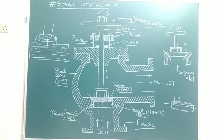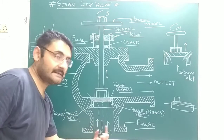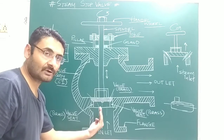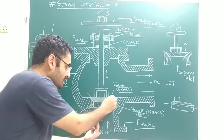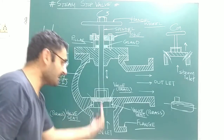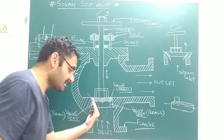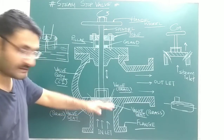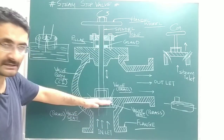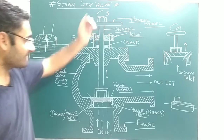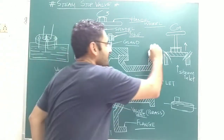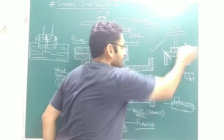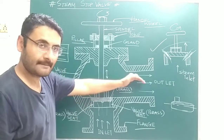Now for the working principle. When steam enters the steam stop valve from the inlet — which comes from the boiler — the valve is initially closed, so no passage is present. The steam stop valve does not allow the steam to escape; the steam remains inside the boiler. When you rotate the handle, the spindle moves upward, creating a passage between the valve seat and the valve.